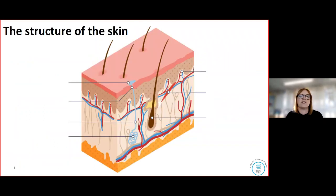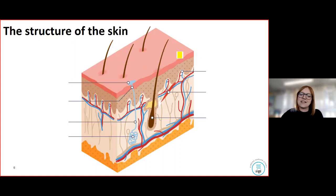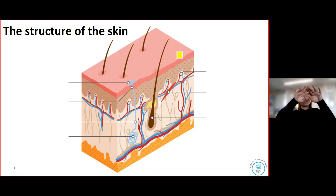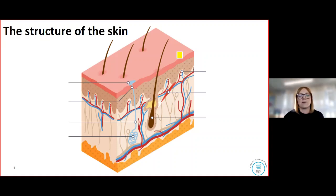Relevant for both foundation and higher tier, we're going to look at the structure of the skin. This is a cross-section through the skin, with the pink section at the top being the outer edge. The skin is always at the top of the diagram — you'll notice it because it's where the hairs come out. You can see hairs coming out of the top.